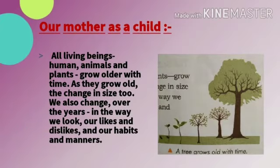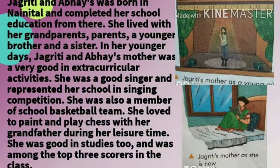Our mother as a child. All living beings — humans, animals and plants — grow older with time. As they grow old, they also change in size. We also change over the years in the way we look, our likes and dislikes, and our habits and manners.